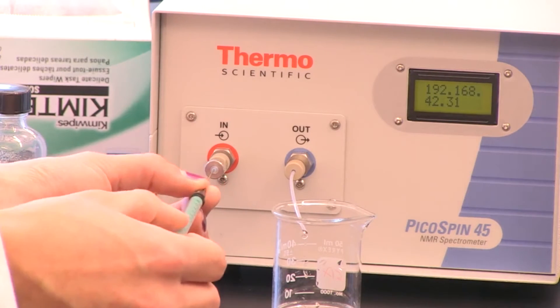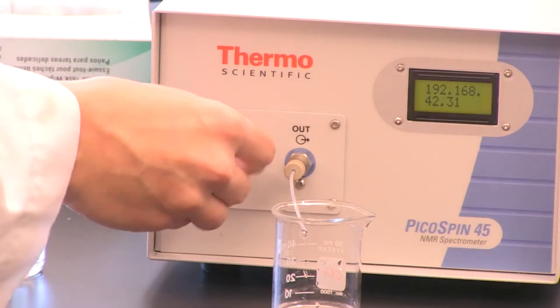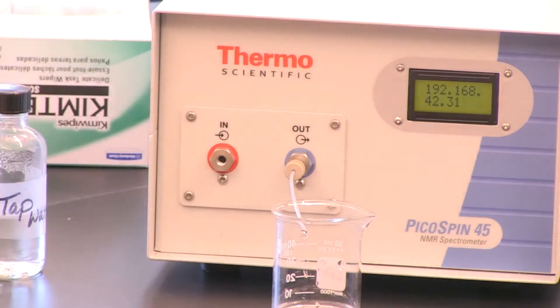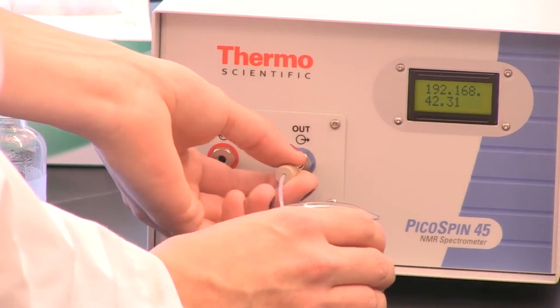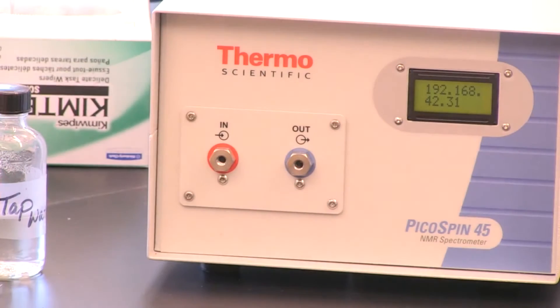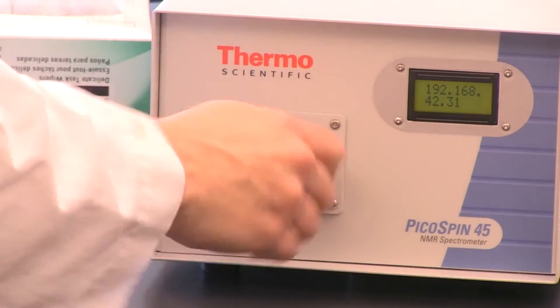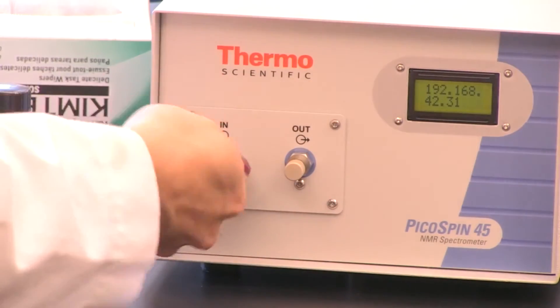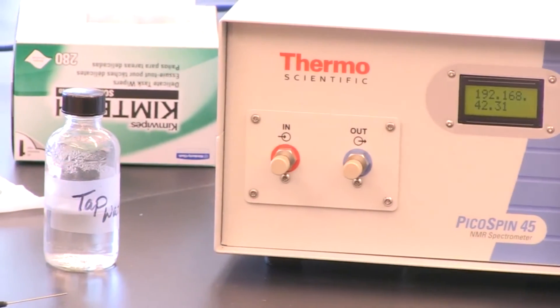So once your sample is injected, remove the syringe. And then remove the flat syringe port out of the in port. And then remove the drain plug out of the out port. And then reinsert the peak plugs into both the in port and the out port. And now we have successfully injected our sample.